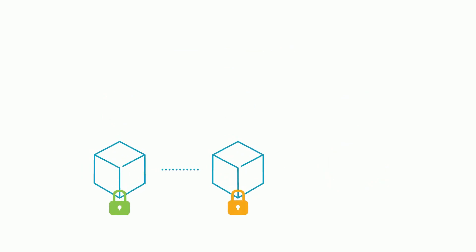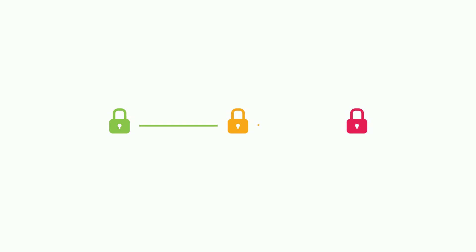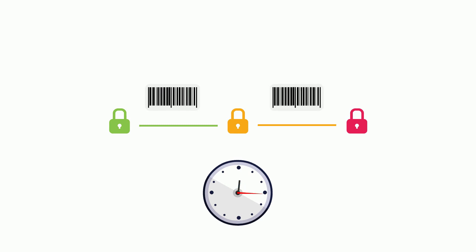Each new block creates its own secure unique code, or hash. This encrypted hash links to the hash of the previous block. Because of these unique hash code links between blocks, blockchain is a super secure way to track transactions over time.